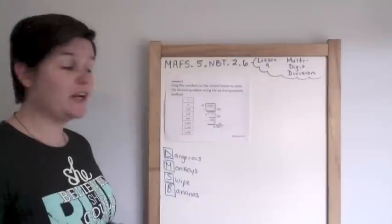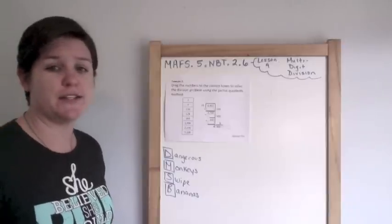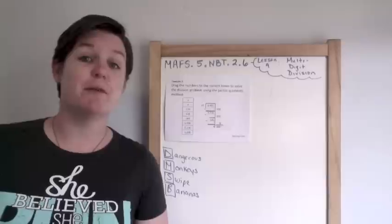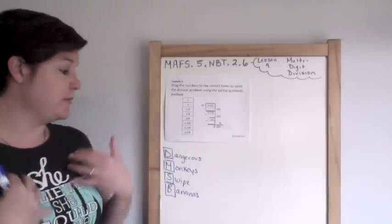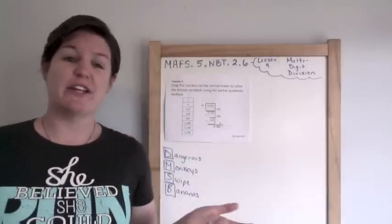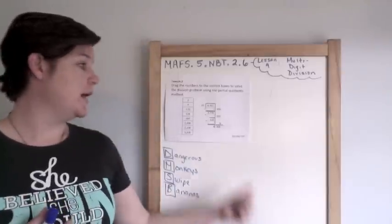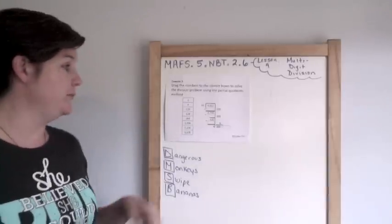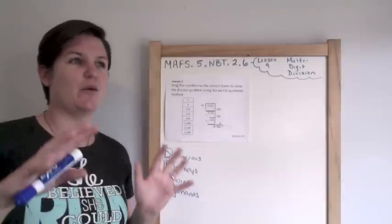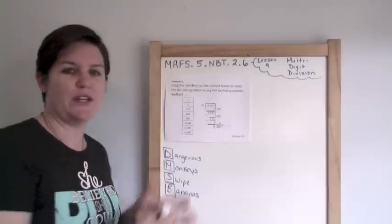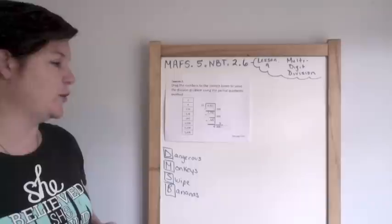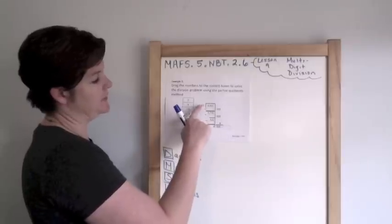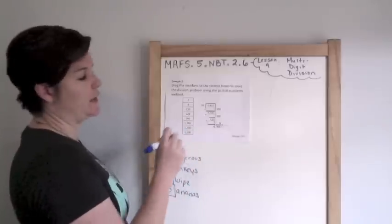Alright, we're on example two. It says drag the numbers to the correct boxes to solve the division problem using the partial quotients method. So this is where you need to be familiar with the partial quotients method. I know for me I am more inclined to use the regular old-fashioned standard long division way, but you do need to be familiar with this just in case something similar pops up on your FSA test.